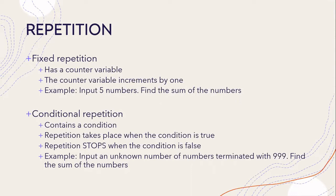The first type of repetition is fixed. In terms of fixed repetition, we know how many times the repetition will take place. For example, we want to input five numbers — so this is fixed repetition. We want five numbers and we want to find the sum of the numbers, but in terms of the repetition that has to take place to get the numbers, we know the number of times the repetition should take place, which is five times.